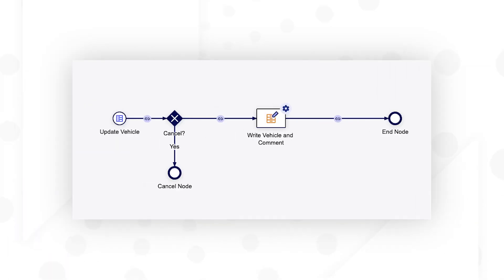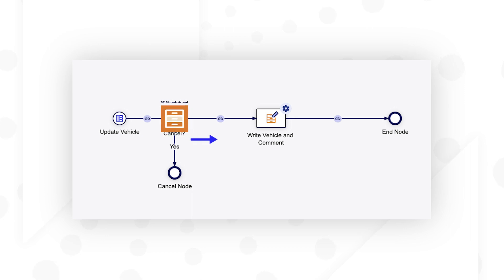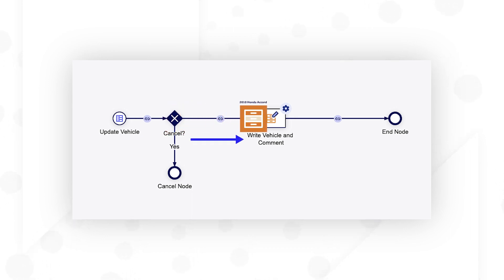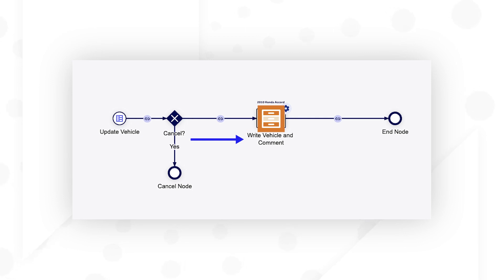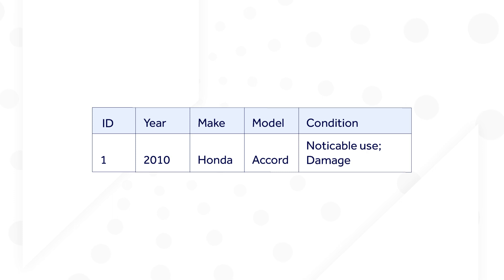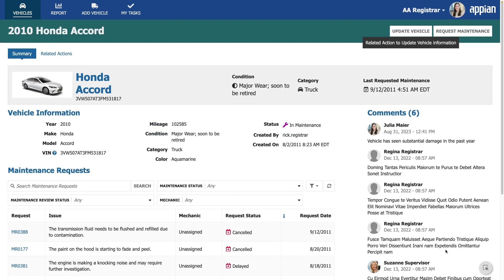The updated information from the form, including the comment, is passed further down the process via a process variable. Then, the vehicle and related comment data is written to the database tables and the changes are synced in Appian.